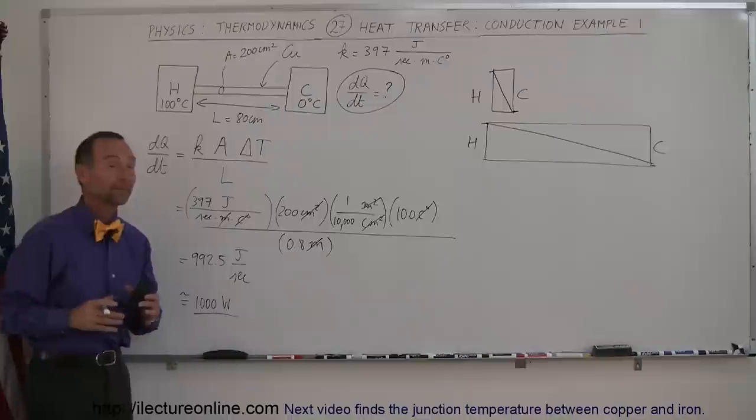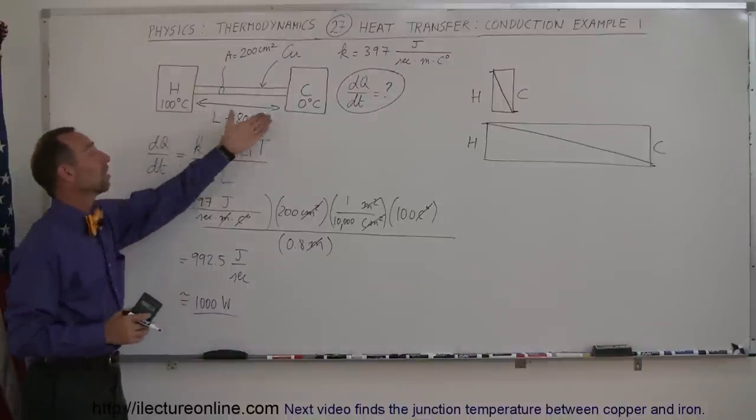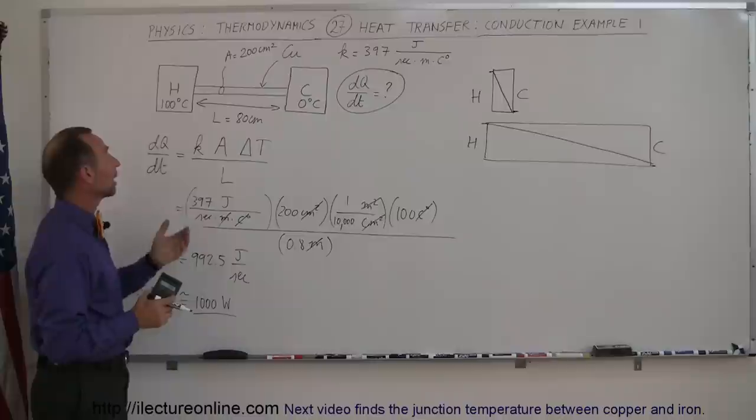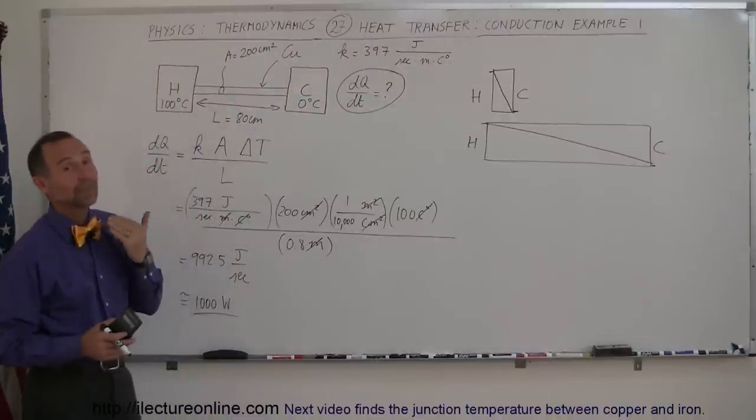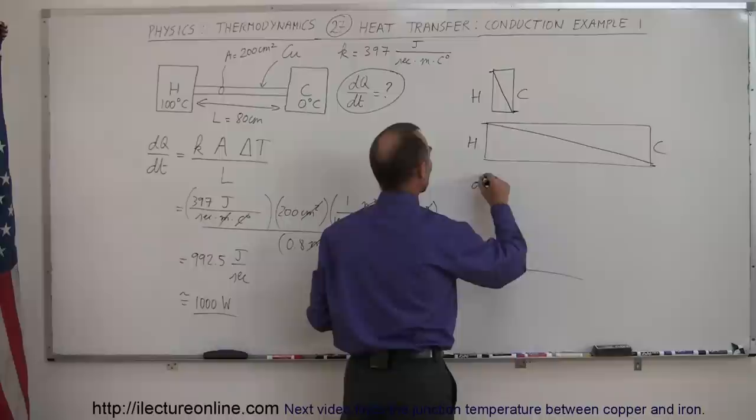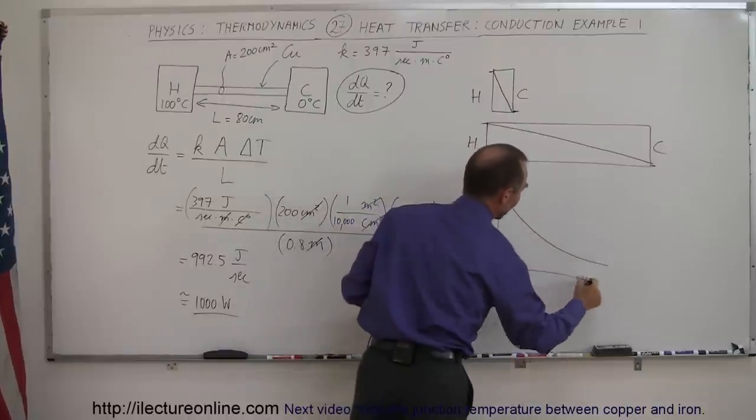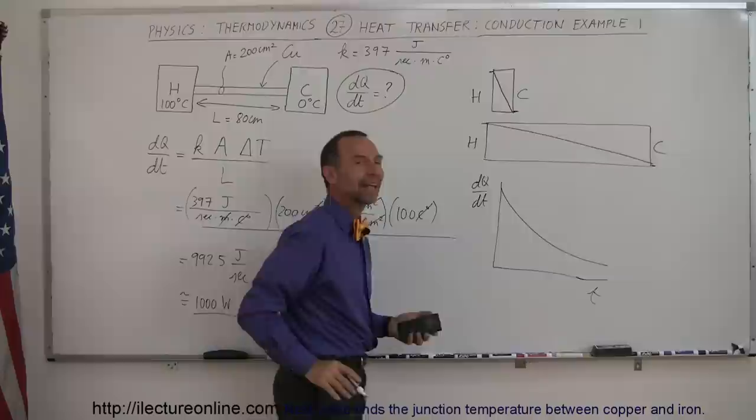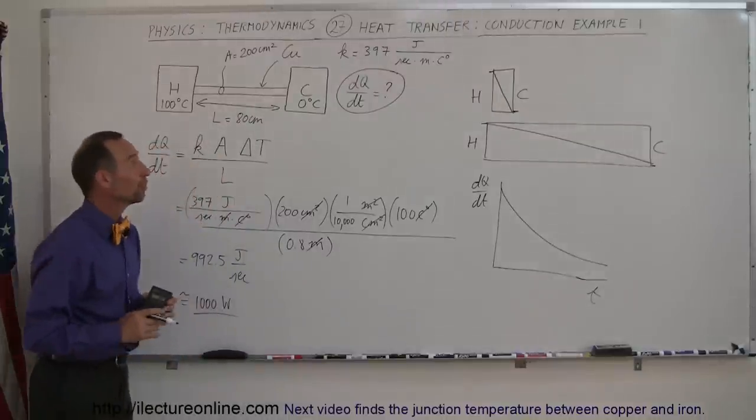A more difficult problem would be, of course, is let's say we don't keep these objects at a constant temperature. We allow this temperature to go down, this temperature to go up, and then, of course, you can see that the heat transfer would not be constant. The heat transfer would diminish over time. Then we would have a dQ/dt that would kind of look like this over time, and, of course, that's for the future. We're not going to worry about that yet. For a future video, perhaps, yes.